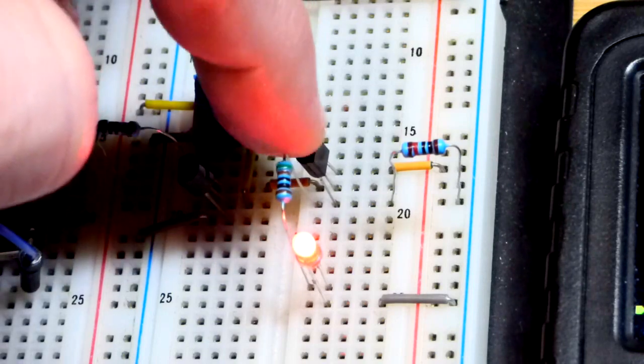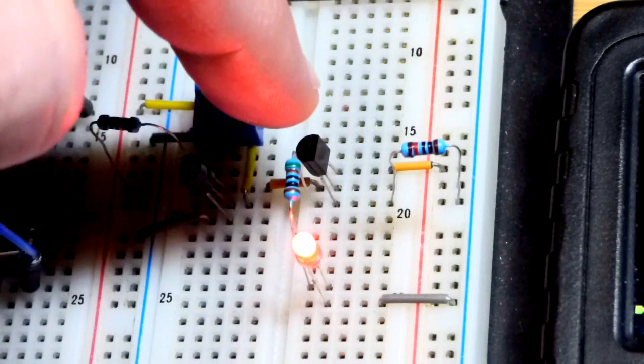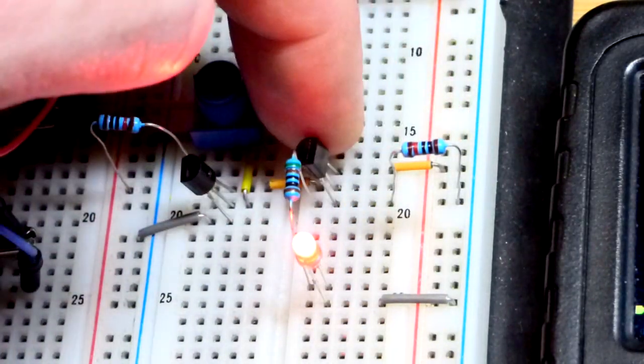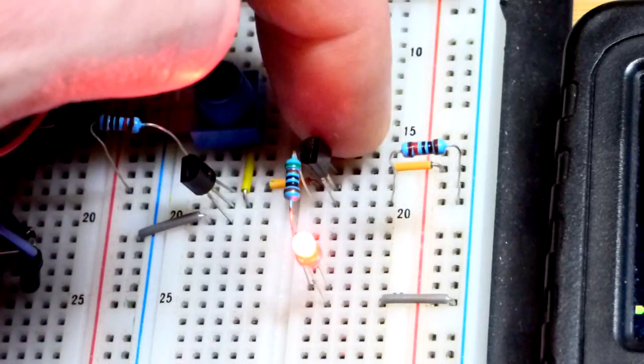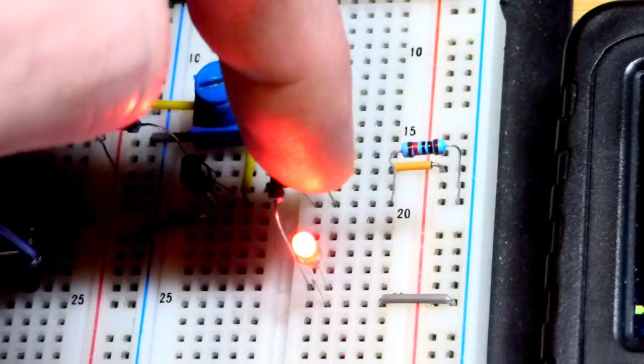It has the same pin layout as that one. So I have to rotate it if I want to keep positive up higher. So the collector is up there to the positive supply. Remember, polarities are going to be opposite for collector-emitter.